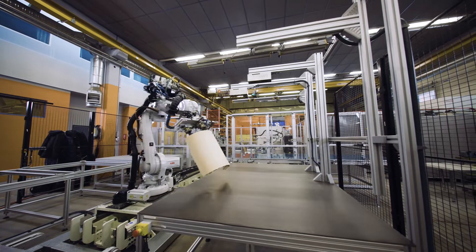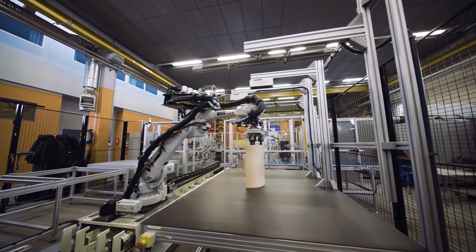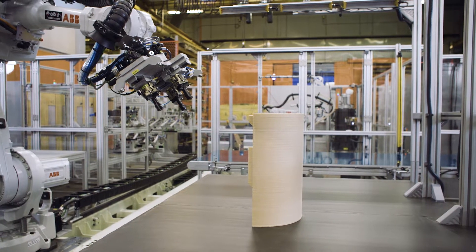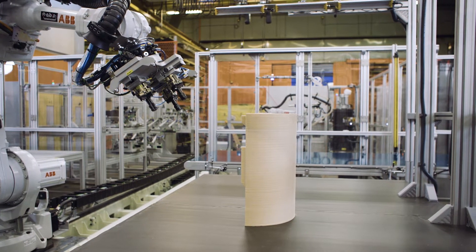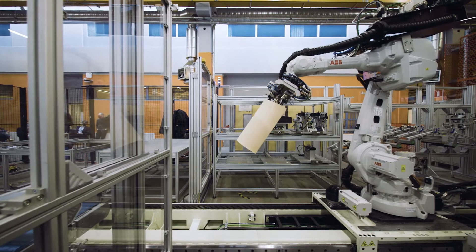On the belt, the component either passes through a vision station for quality control or moves directly for further processing. At the vision station, faulty components are removed from the belt. Flawless components are cleared to continue to the machining station.